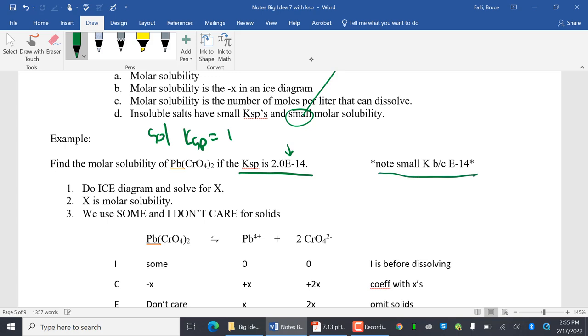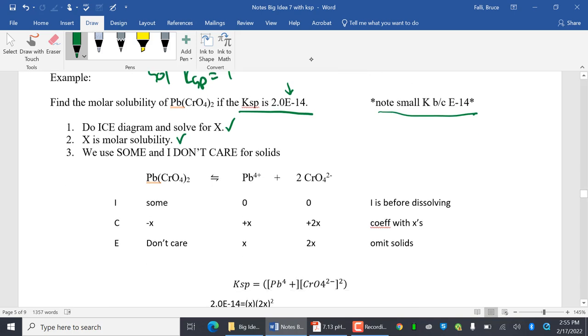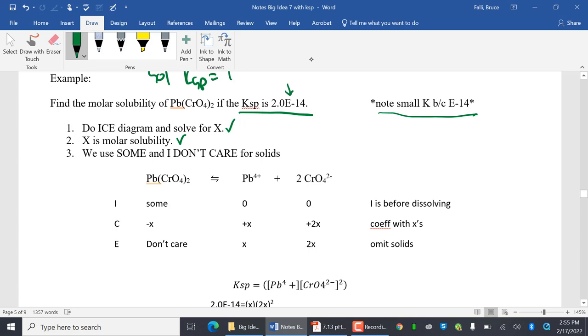We're going to do an ice diagram and solve for X. We've done that before. X is molar solubility, and I want to remind you that we are fine and dandy to use solids. We use some, and we use I don't care. Why? They're not in the equilibrium expression. So again, this problem, find the molar solubility of lead chromate if the KSP is 2 E negative 14.